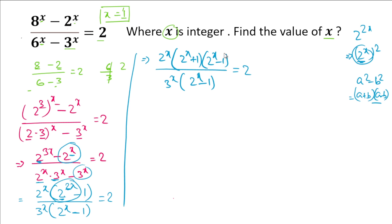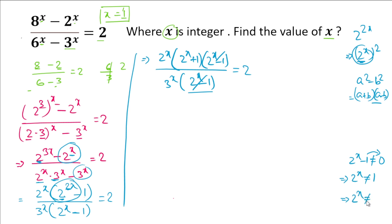We can cancel (2^x - 1) from numerator and denominator, provided 2^x - 1 ≠ 0, i.e., 2^x ≠ 1 = 2^0, meaning x ≠ 0. So x should not equal 0.